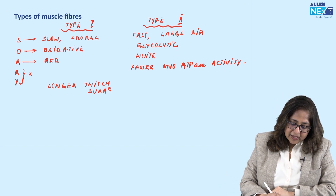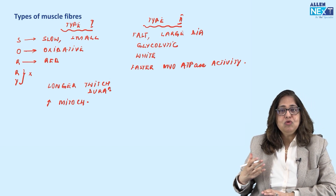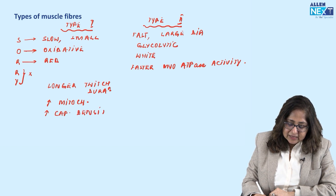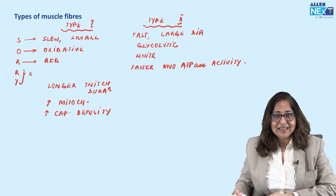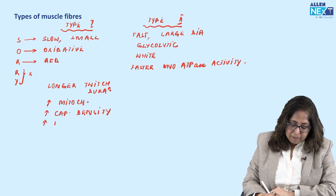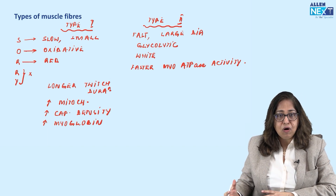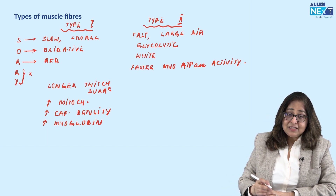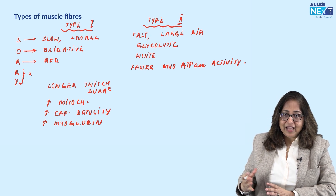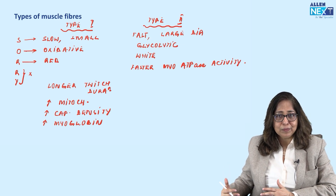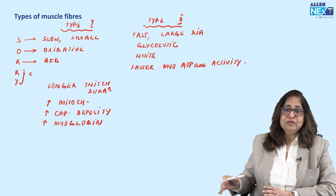Type 1 fiber has more mitochondria — oxidative metabolism means more mitochondria. It has a higher capillary density and needs a better blood supply. It has more myoglobin, which is a pigment present in type 1 fibers and acts as a storehouse of oxygen, giving type 1 its red color. Type 2, on the other hand, has less mitochondria, lower capillary density, and less myoglobin because its metabolism is glycolytic.